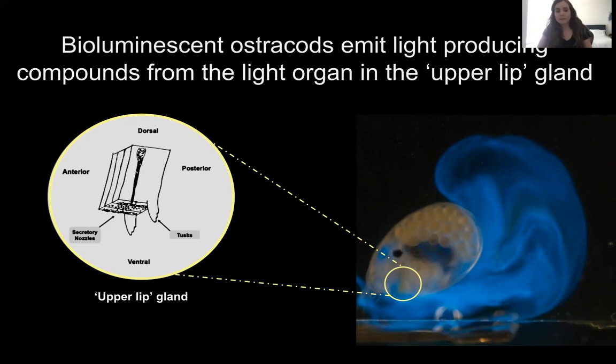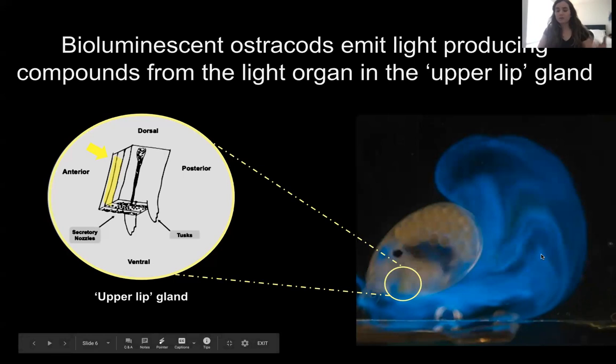From previous morphological and histological work, we know there are specialized cell types in the upper lip gland that produce digestive or mucus enzymes. These cell types are really large and long — about 300 microns in length and 100 microns in width. They are secretory cells with little nozzles that allow secretion. In bioluminescent ostracods, there are specialized cell types that individually produce the luciferin and luciferase. All ostracods have this upper lip gland, but only bioluminescent ostracods have these additional cell types comprising the light organ.